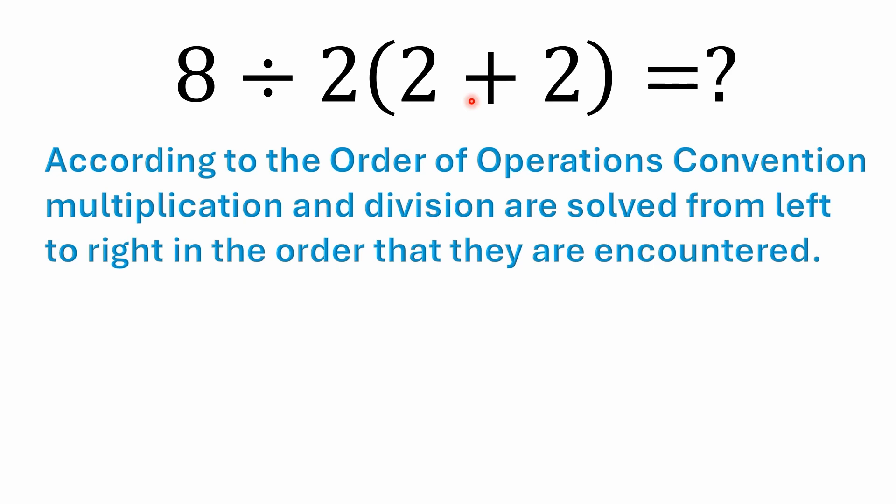Now, according to the way that the Order of Operations Convention is interpreted, that's PEMDAS, BODMAS, whatever, multiplication and division are just solved from left to right in the order that they're encountered. So there's no priority given to implicit multiplication. That means that when you look at a problem like this, you would actually solve the 8 divided by 2 first, and then the 2 plus 2.